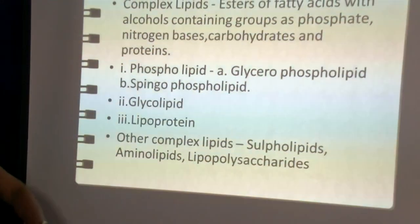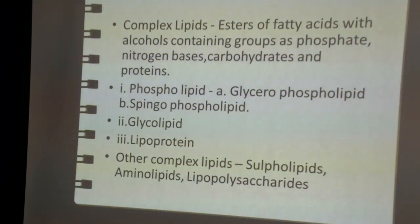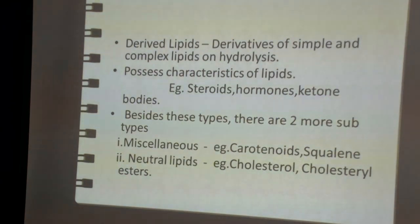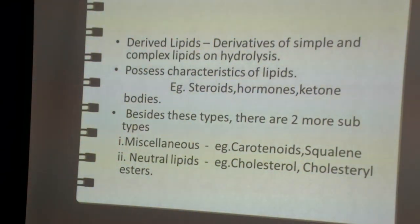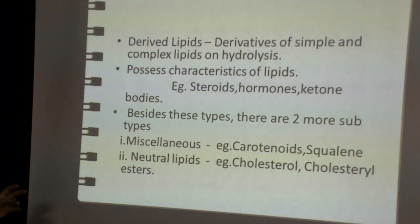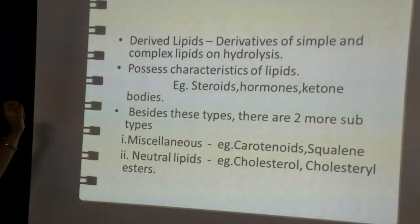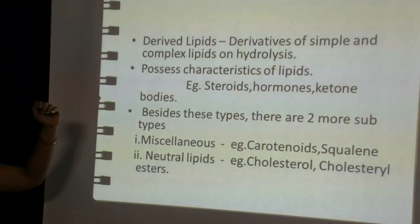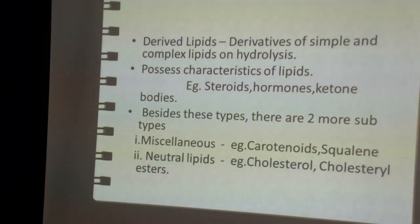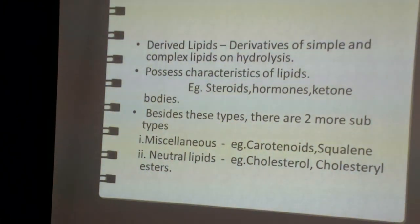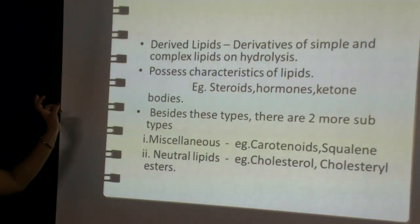Sulfolipids are formed when a sulfur group gets associated with lipids. Aminolipids are formed when amino acids are joined with lipids. Lipopolysaccharides are formed when lipids get associated with polysaccharides. The third type of lipids are derived lipids — there is no separate group as such. Instead, when simple and complex lipids undergo hydrolysis, the derivatives of that hydrolysis form a special group called derived lipids, which still possess all the characteristics of lipids.